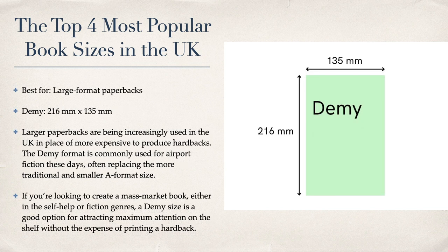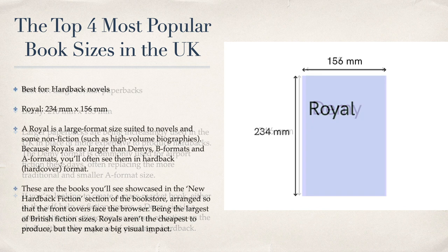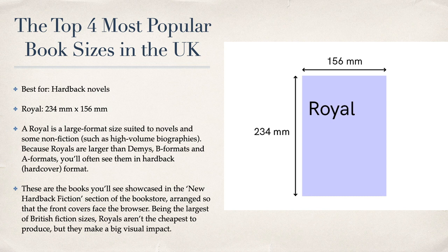Large format paperbacks - Demi - is 216 by 135 millimeters. Larger paperbacks are increasingly used in the UK in place of more expensive-to-produce hardbacks. The last one is Royal - best for hardback novels. Unless you particularly want a hardback, don't go down this road. But it doesn't matter for our exercise - you can pick whichever one you like.